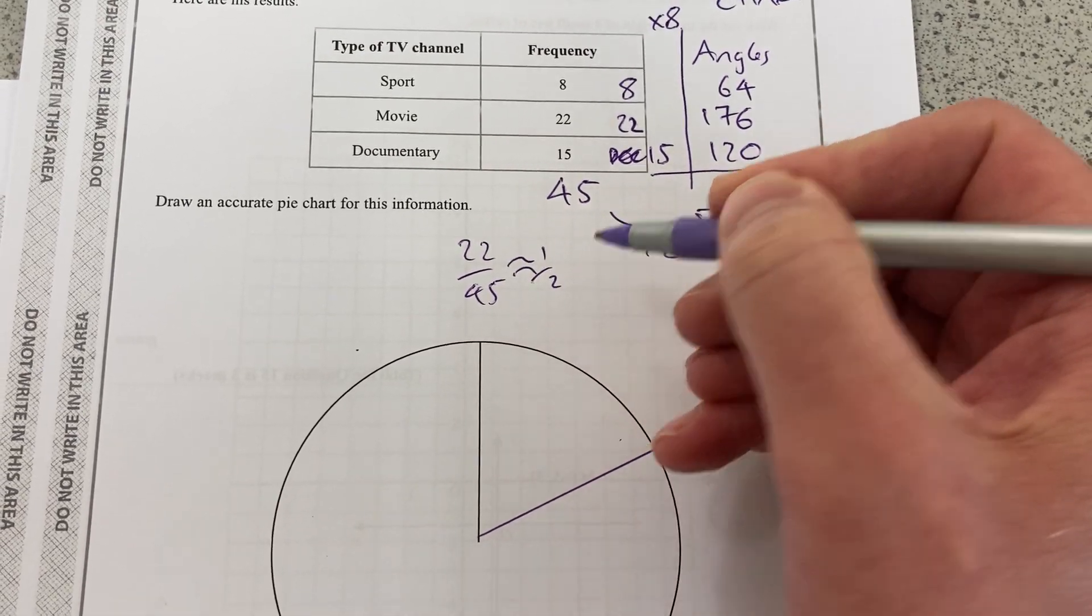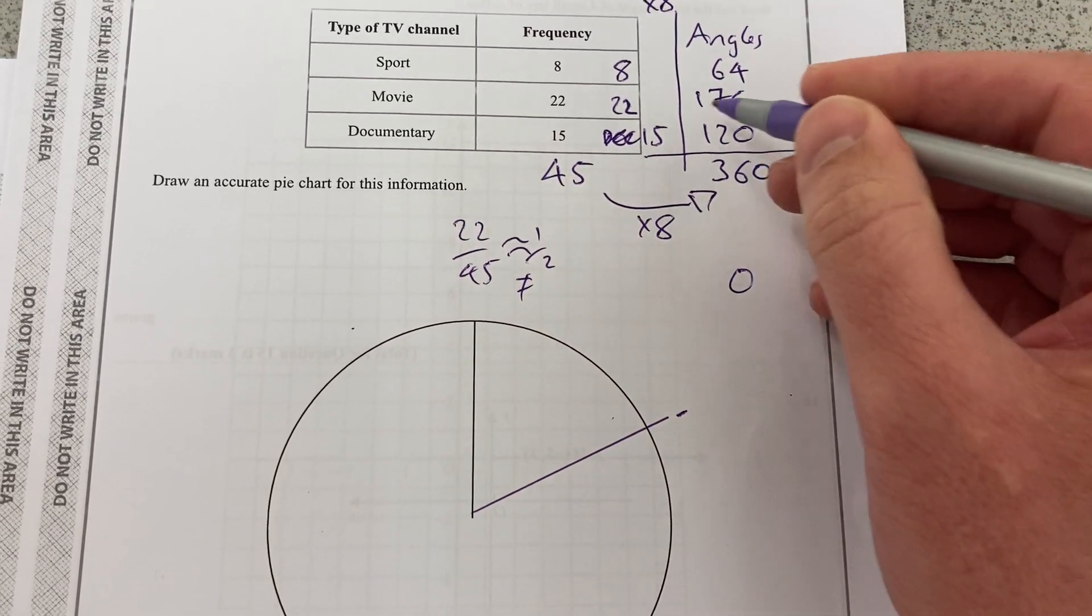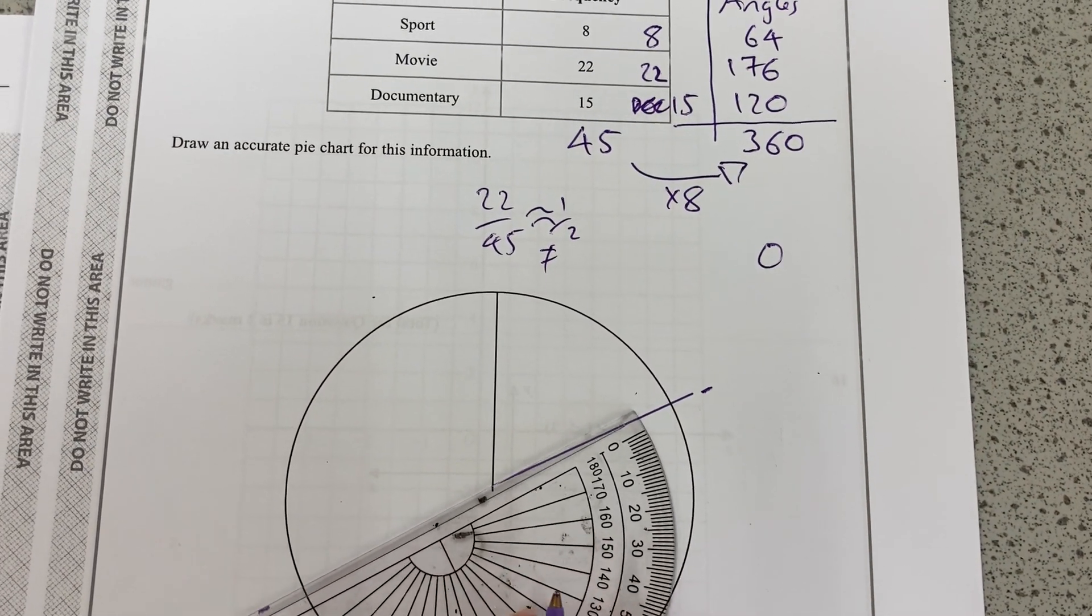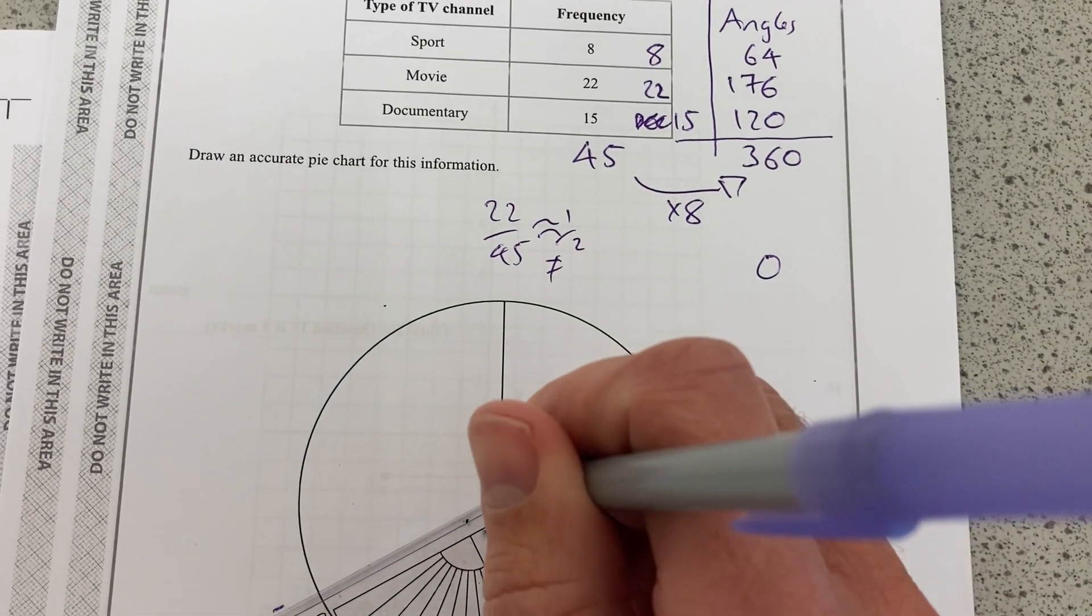It's nearly half 45. It's not exactly, it's not equal to a half, so it's not 180, but it's just short of it. So I'm nearly getting a straight line there, but just off that.